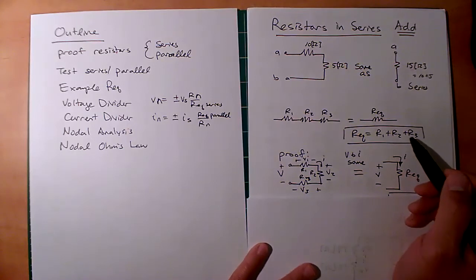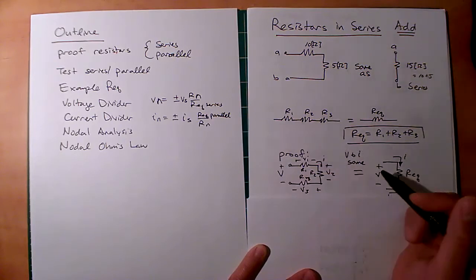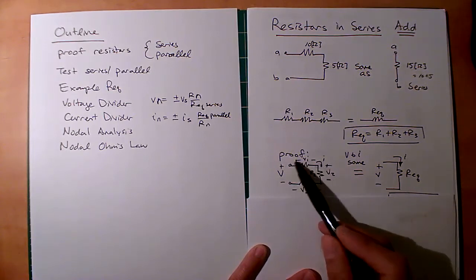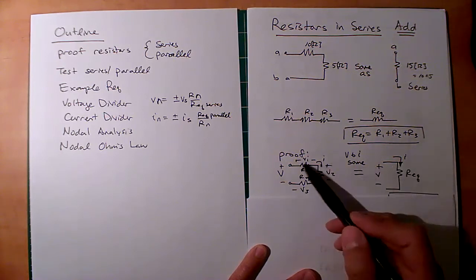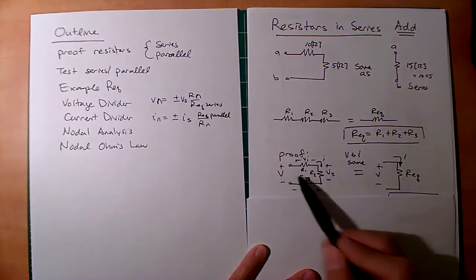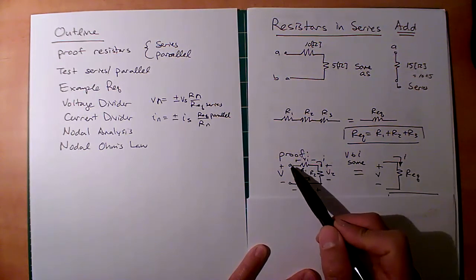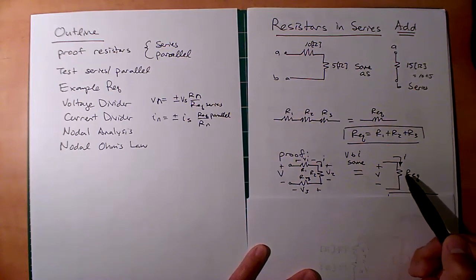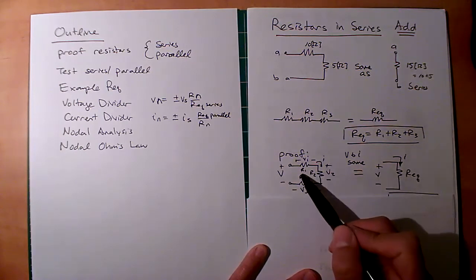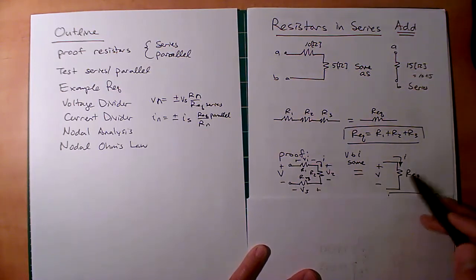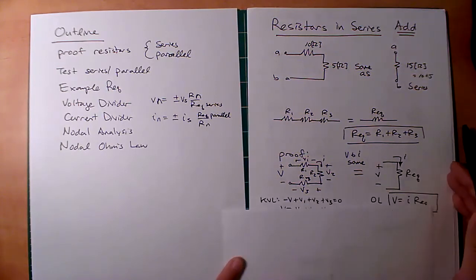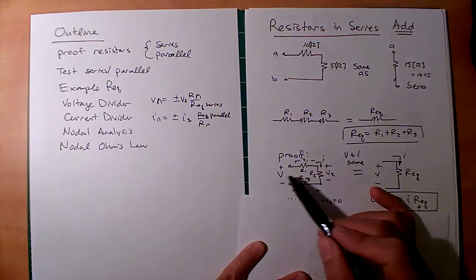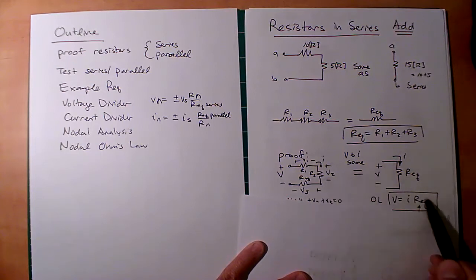Where did this come from? Can we use our fundamentals to see why it's true? Let's say we have three resistors in series — it could be 30 — and we want to represent the same system with one resistor. We have a voltage across it and a current I going through all of them. We want this behavior to be the same as the R equivalent. On the right, Ohm's law gives V = I·R_eq. I want to reduce the left side to also get V = I·(something), and that something should match R_eq.